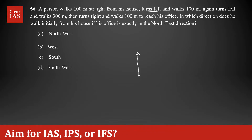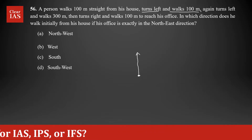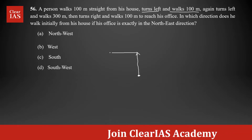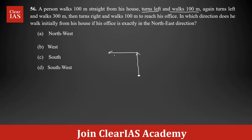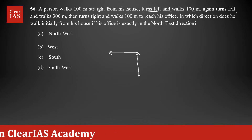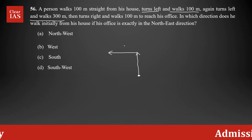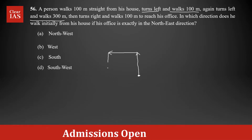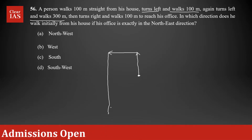Then he turns left and walks 100 meters again. That means the left side — if a person is walking towards north, his left is going to be this direction. Again, 100 meters left. Then again, he turns left and walks 300 meters. So a person is now moving towards west. Left side means in this direction, and he is walking 300 meters, somewhere around here.